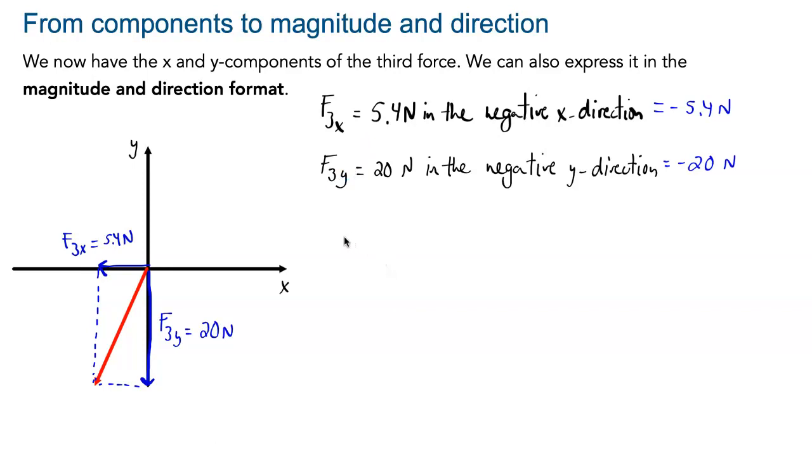If we want to find the magnitude and direction of the vector, we can simply do it by using, for finding the magnitude, we'll just be by using Pythagoras, as I am convinced you've done before.